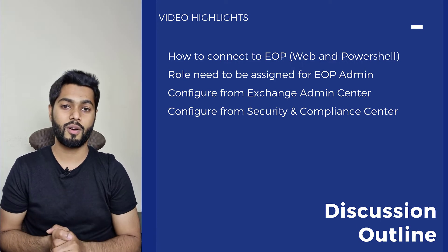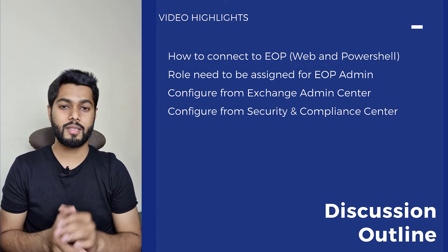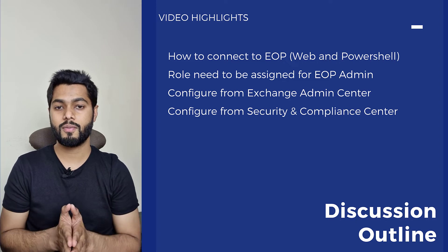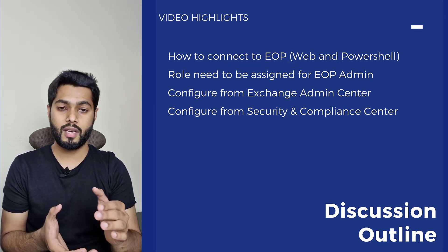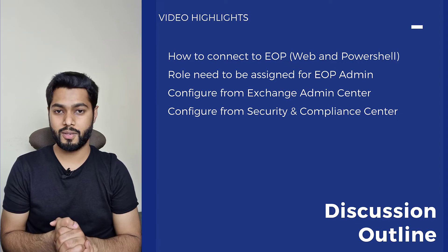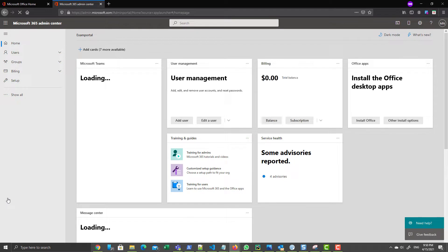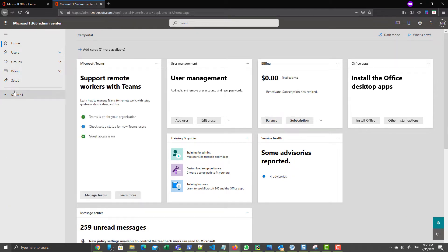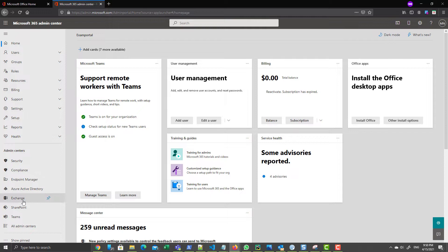Now we are going to begin the configuration of connection filter. We will see how to configure it from the admin center via the web browser, and also using PowerShell. First, log into the Microsoft 365 Admin Center, expand the 'Show All' option to see all admin centers, then click on the Exchange option to take you to the new Exchange Admin Center.